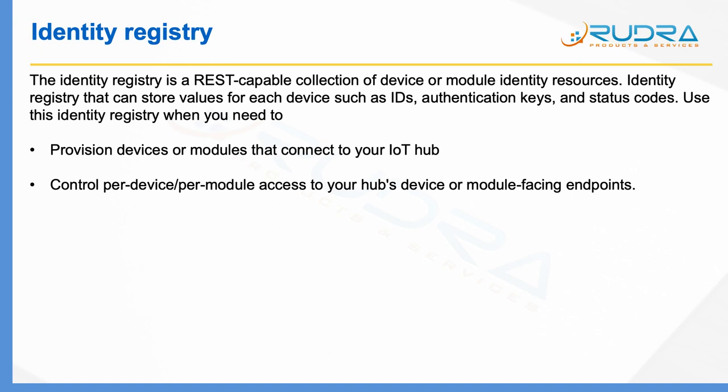Basically, what will happen is when you register a device with IoT Hub, automatically an identity will get created for it. Using that identity, your device will be able to authenticate itself to Azure IoT Hub and send device-to-cloud communication or receive cloud-to-device communication. Whenever you register a device, an identity will get created with an ID and authentication keys, which you need to pass on to that particular device in order to interact with this IoT Hub and submit messages.